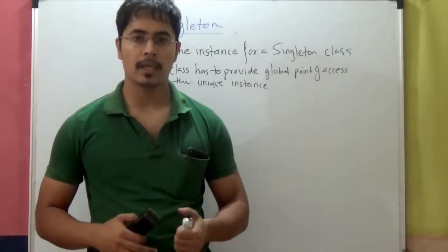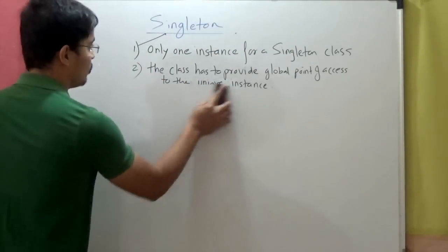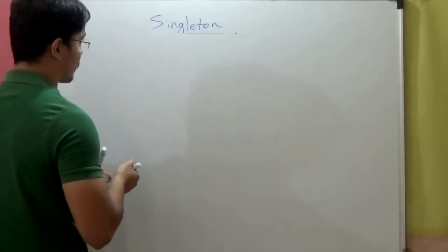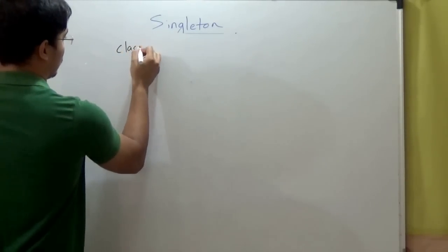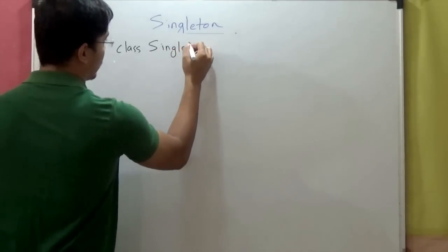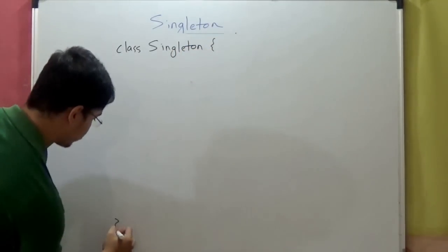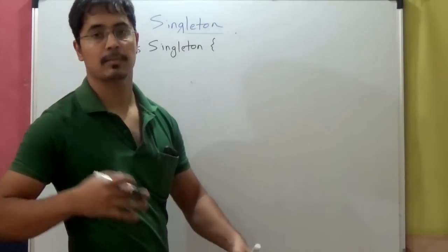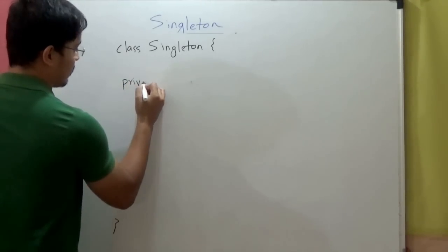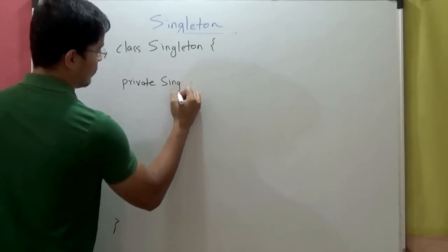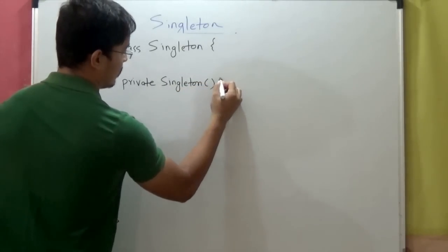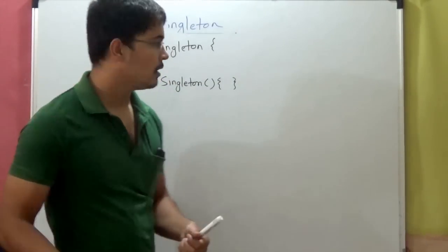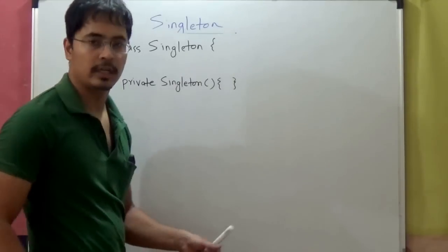Now let's see how to implement this singleton pattern — how to define a singleton class. The way you do it is you say class Singleton. The key to implementation of singleton pattern is to make the constructor private. So the first thing you should do is make the constructor private. If the constructor is private, that means no other class can directly instantiate the singleton class.